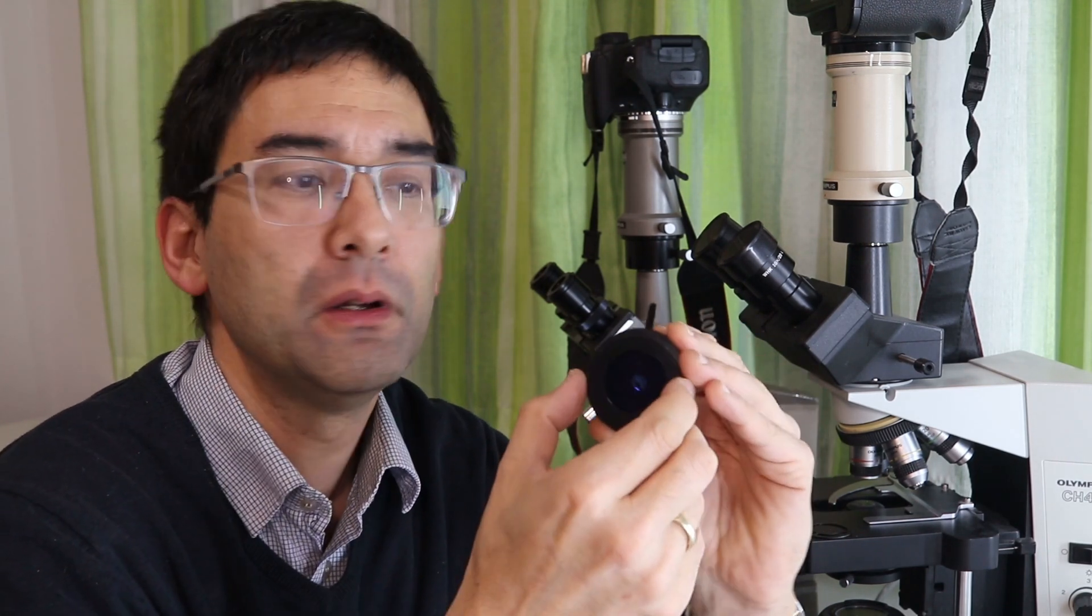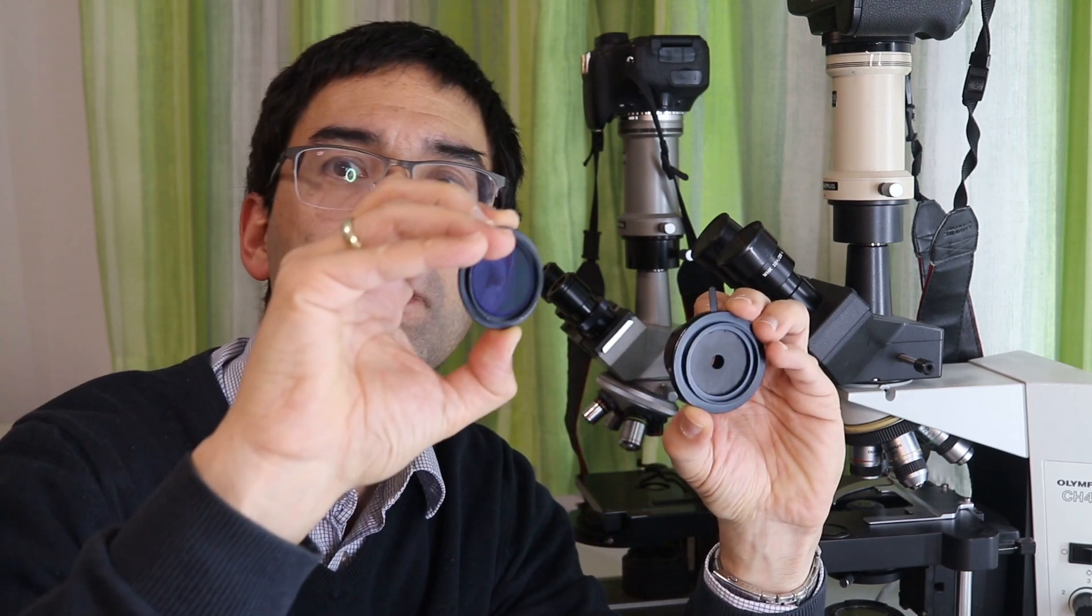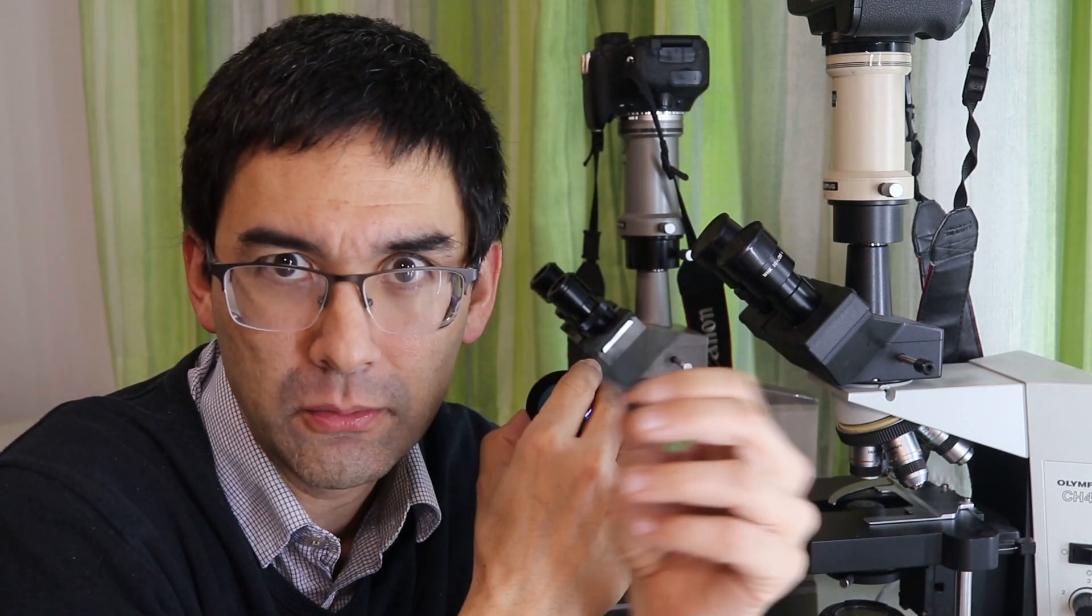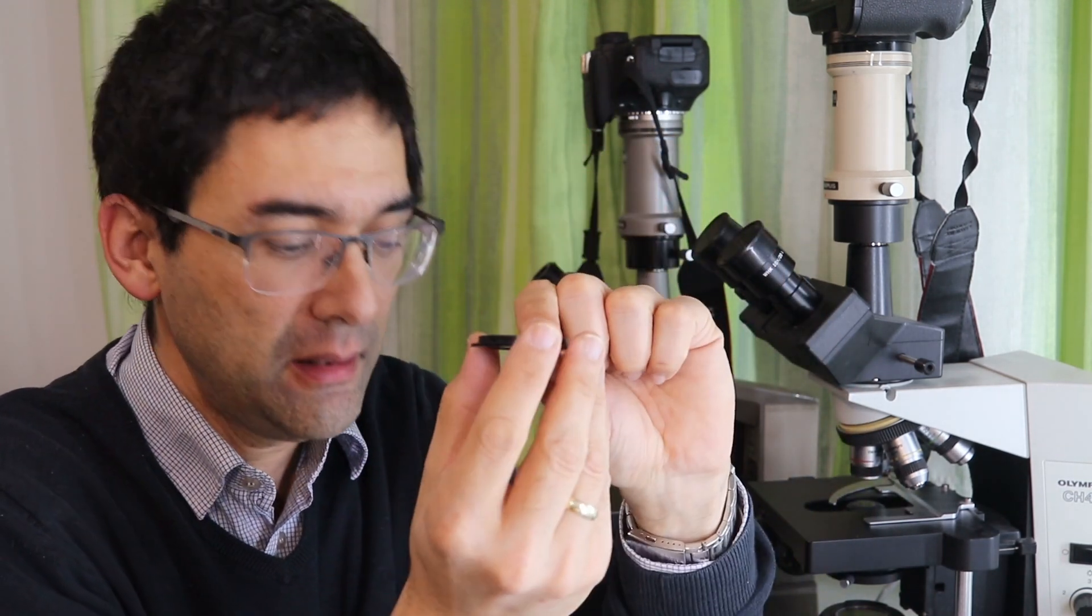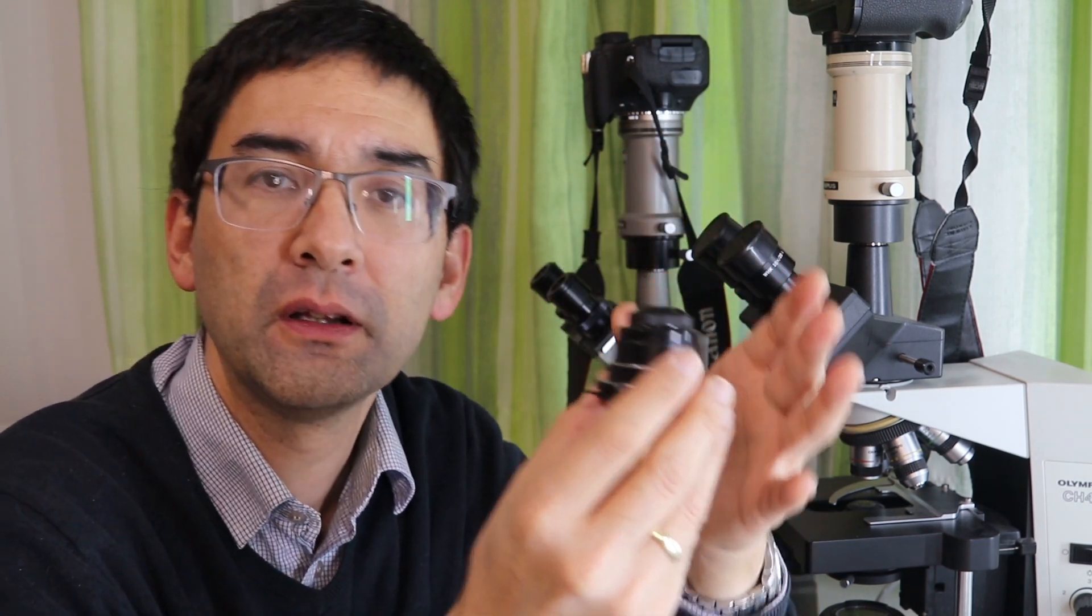Because here on the bottom, what you can do is there's a filter holder. And if you can take it, you can take it off. That's a filter holder. It's a blue filter to balance the color temperature. And if you want to have dark field, what you can do is you can take this dark field patch stop. If you don't have one, you can make one yourself if you want to. And you put it into the filter holder like this. And then it goes beneath the condenser. And then you have dark field.